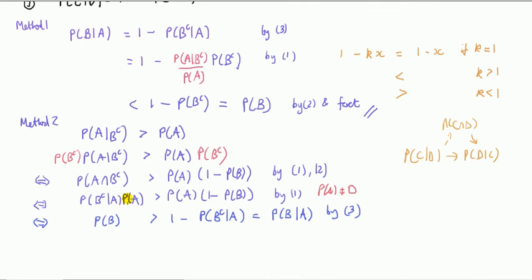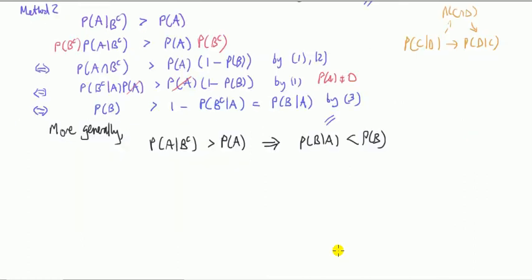Now, supposing that probability A is not zero—these kind of elementary questions you always have to assume that—they cancel. And then just rearrange: take probability B to the left-hand side. I add probability B to both sides and subtract this from both sides, I have this. But this, by three, is that. Done.